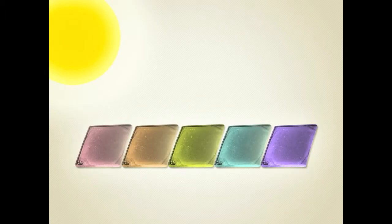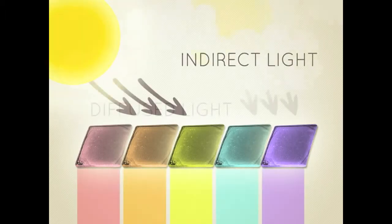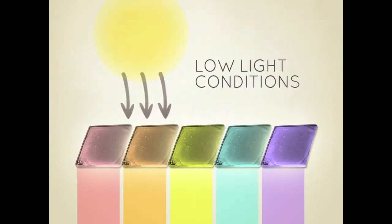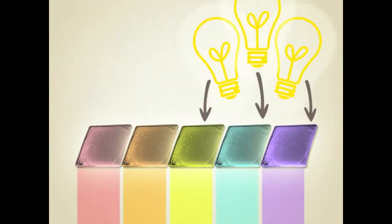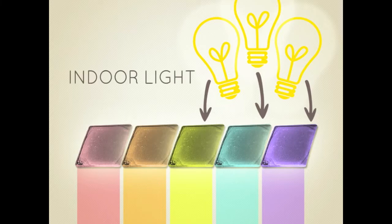Unlike conventional solar cells, DSCs are able to work better under indirect, diffuse, and low-light conditions. This means that DSCs generate energy as long as there is light, which makes them ideal even for indoor use.